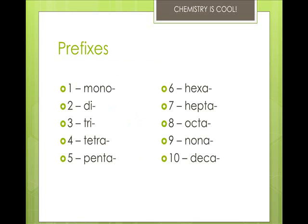Here's a quick rundown of your Greek and Latin root prefixes that we will be using in molecular compounds. Mono is one, di is two, tri is three, tetra is four, penta is five, hex is six, hepta seven, octa eight, nona nine, and deca is ten. Make sure that you do know these prefixes, and it'll come a lot easier for you.